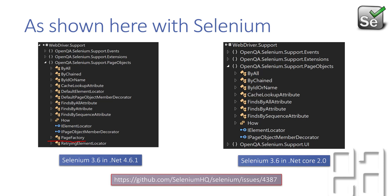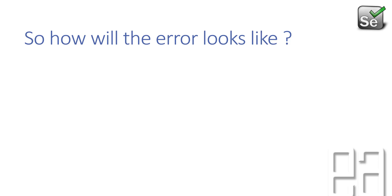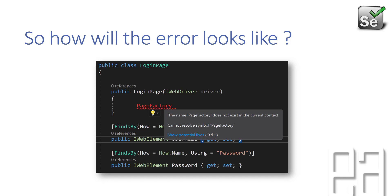This is an open issue on GitHub at github.com/seleniumhq/selenium/issues/4387, and it is currently in open state. Maybe in 3.7.0 or 3.8.0 this will be addressed, but as of now it is one of the most burning issues. If you try to consume PageFactory in code, you will see an error saying 'PageFactory does not exist in the current context' and it cannot resolve the symbol PageFactory.